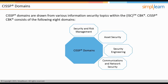Four, Communications and Network Security. This domain discusses network structures, countermeasures, transmission methods, transport formats, and security measures used to provide availability, integrity, and confidentiality. Five, Identity and Access Management, covering identification, authentication, authorization, identity services, identity and access provisioning lifecycle, and attacks on access control and its countermeasures.